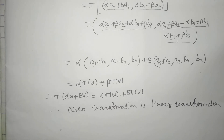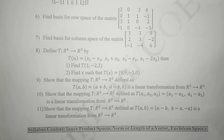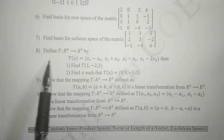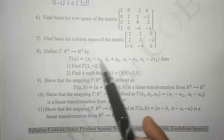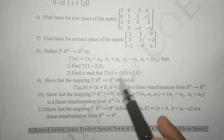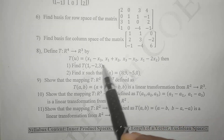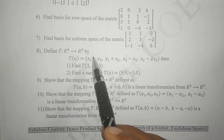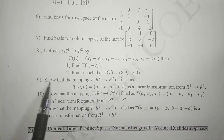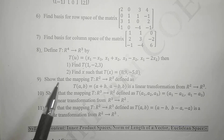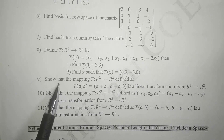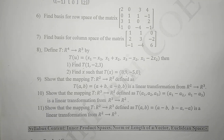For practice, you have to solve example 8: define T from R raised to 4 to R cube by T of U equal to this expression, find T of (1, -2, 3) and find x such that T of x equals (8, 9, -5, 0). We also solved example 9 in this video, and you have to solve example numbers 10 and 11 similarly. If you have any doubts, you can ask me in the comment box or on WhatsApp. Thank you for watching.